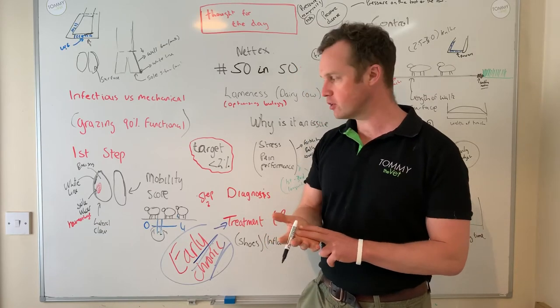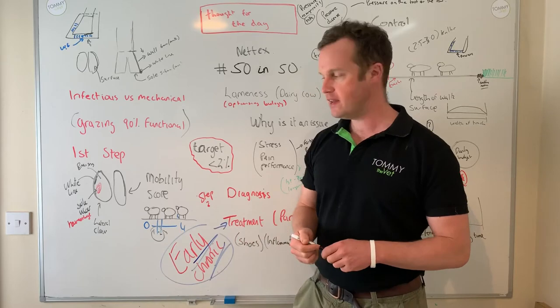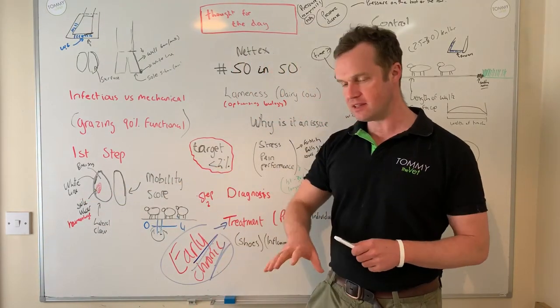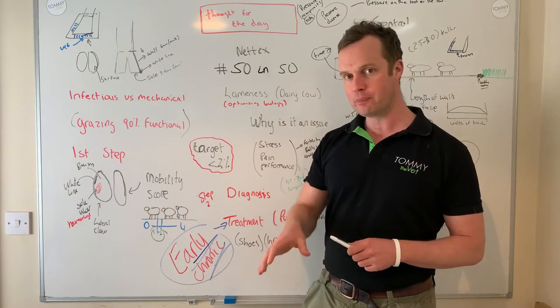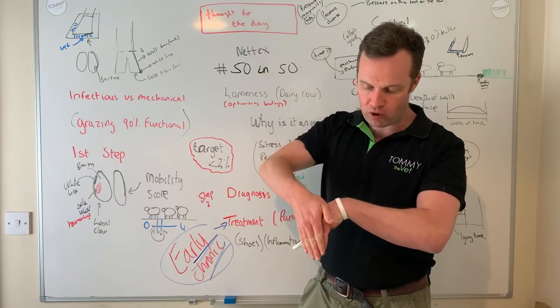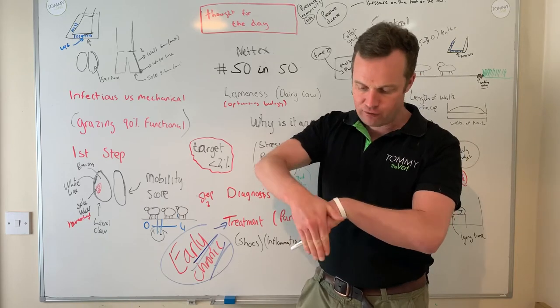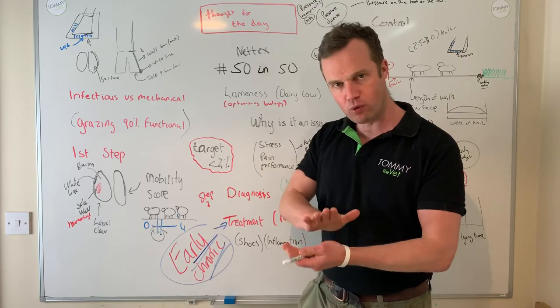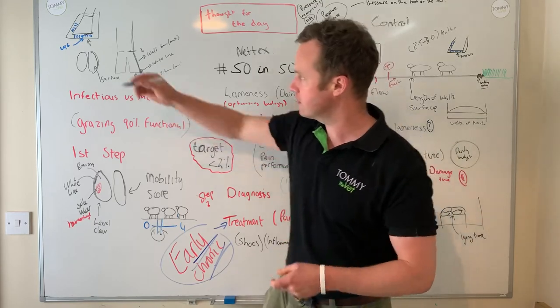They're functional ones and they can tell us a lot about what's happening. White line to me tends to be talking about pressure and the movements of the claw. If you think the hoof wall is attached to the hoof like this, for moving pressure why are you getting white line? Sole is more to do with pressure, what's happening on that small little layer.